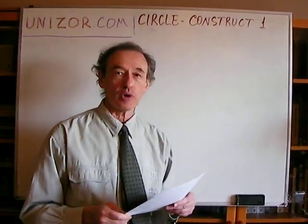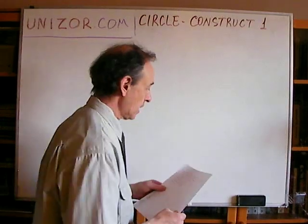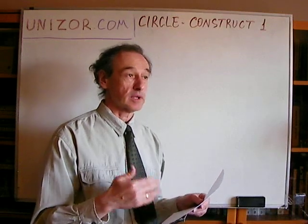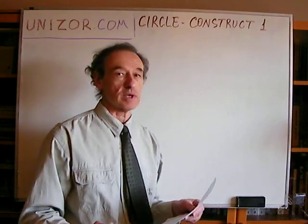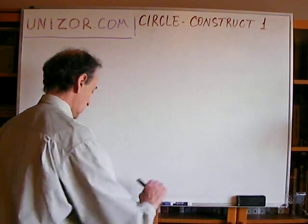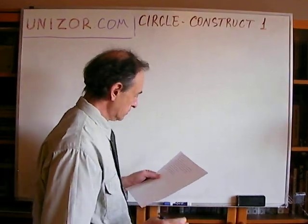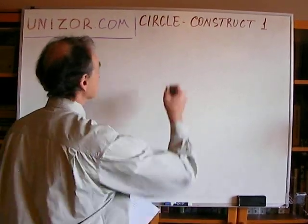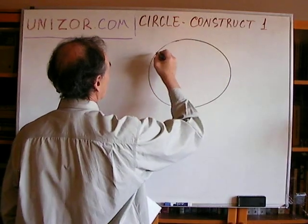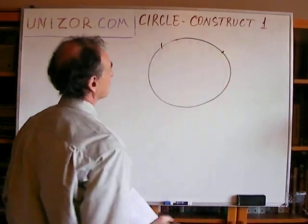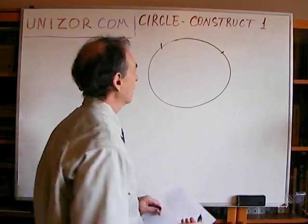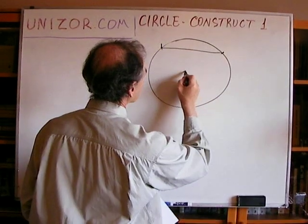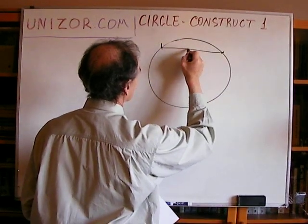So if you have construction problems related to a circle — very simple, by the way, I am dealing with all the more complex problems until later when all the theoretical material will be completed. Number one: divide in half an arc in a circle. So if you have a circle and an arc from here to here, and you have to divide it in half, obviously you connect it with a chord and drop the perpendicular from the center, and continue.